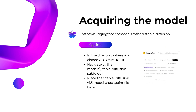You're almost at the finish line. Head back to the main Stable Diffusion WebUI directory, find the webui-user.bat file, and give it a double click. Once it's up and running, your browser is the gateway to your new AI toolkit at the localhost address.